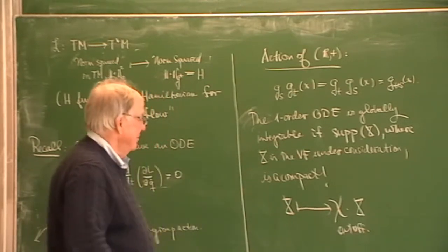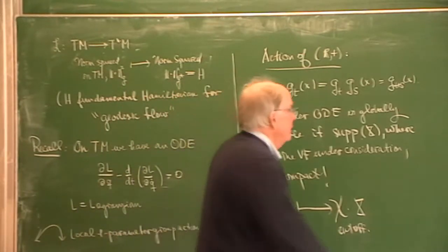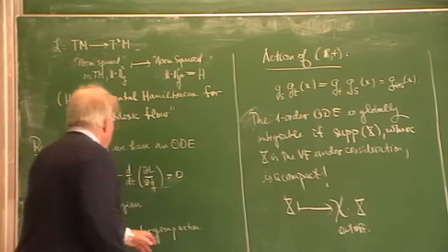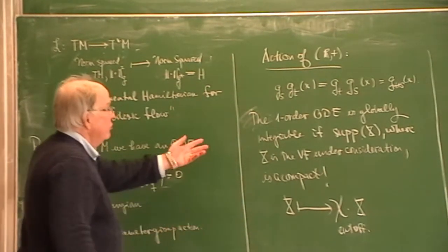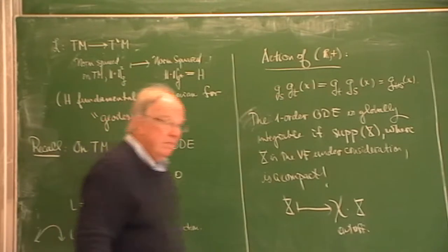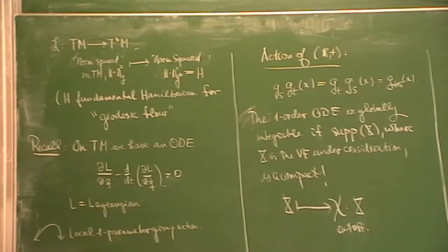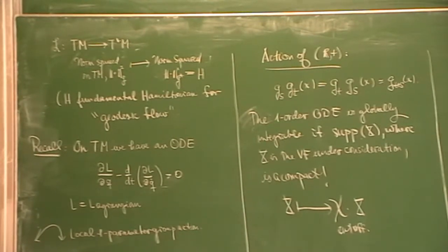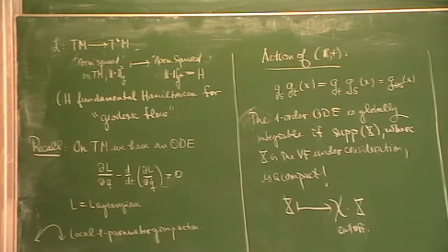This thing is a local one-parameter group action. If you want to understand it on a compact manifold, you don't have to worry—you don't even have to cut it off. The manifold is compact. One would worry if the manifold is not compact. The tangent bundle, which is certainly not compact, requires this to be treated locally.